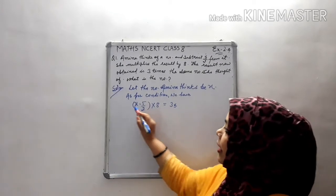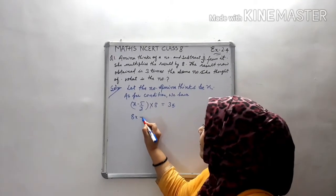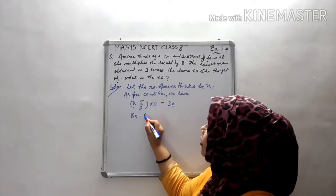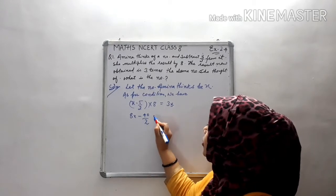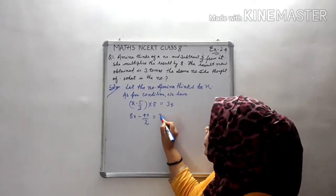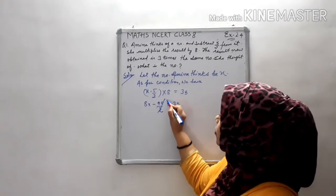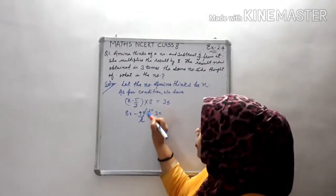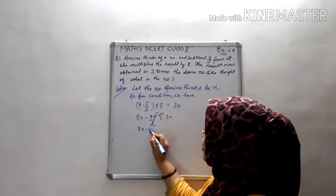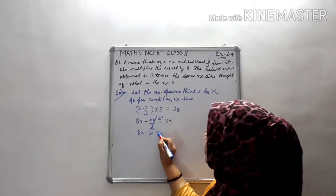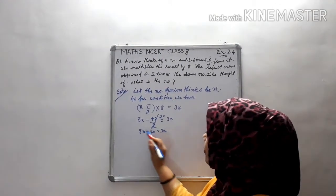Look here: 8 into x minus (8 times 5/2). That gives us 8x minus 40/2, which simplifies to 8x minus 20, and that is equal to 3x.